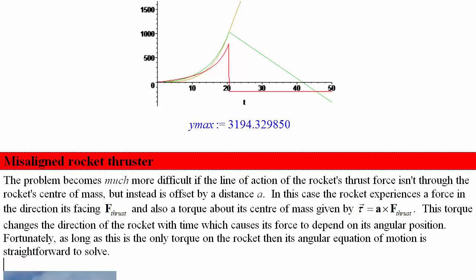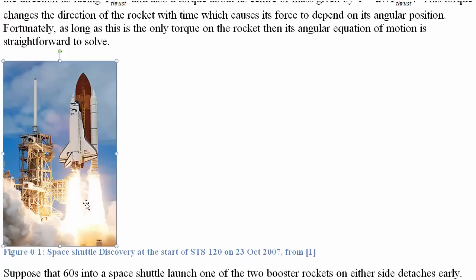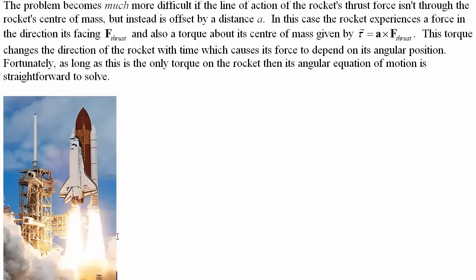Next is a quite difficult problem: the misaligned rocket thruster. We're looking at the space shuttle — specifically the Space Shuttle Discovery at the start of STS-120 on October 23rd, 2007. We'll imagine what happens if, 60 seconds into launch, one of the side booster rockets falls off. The large central tank carries fuel for the shuttle itself, but we'll focus only on how the booster rockets operate.